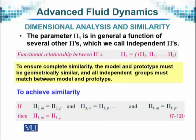And obviously there will be an independent Pi and a dependent Pi. The parameter Pi 1 is in general a function of several other Pis, of course, because it will be depending upon many other independent variables. So the dependent Pi, Pi 1, is equal to a function of several other variables, denoted by Pi 2, Pi 3, and so on. It can be as many as there.